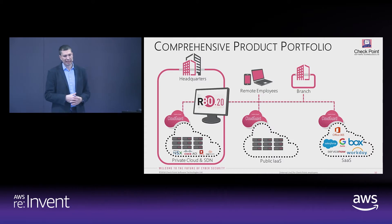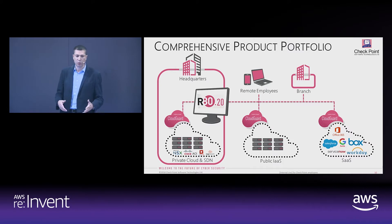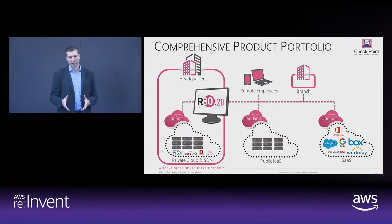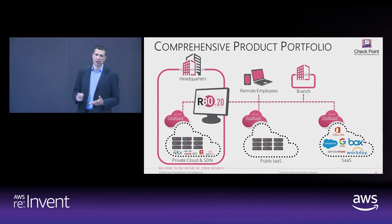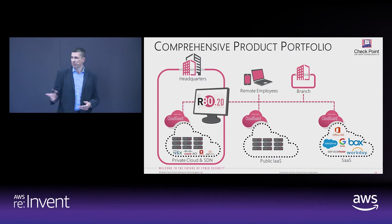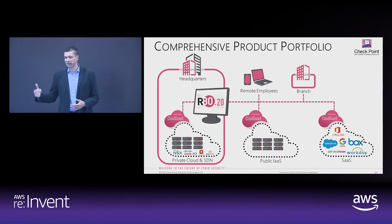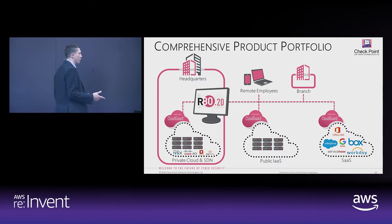For the private cloud, we cover NSX-V, NSX-T, Cisco ACI, Google Networks, and OpenStack. For the public cloud, we target Amazon Web Services, but also Azure, Google Cloud Platform, Ali Cloud, and Oracle Cloud. From a SaaS perspective, the solution — which is kind of a CASB on steroids — is protecting applications like Office 365, Salesforce, and more.